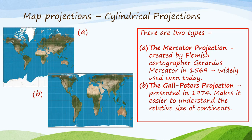Another kind of projection is the cylindrical projection. There are two types. Picture A shows the Mercator projection, created by Flemish cartographer Gerardus Mercator in 1569, and it is widely used even today — this is the kind of map you would easily recognize on a wall. Picture B is called the Gall-Peters projection, presented in 1974, created to make it easier to understand the relative size of continents. If you compare Africa on the Mercator projection with Africa on the Gall-Peters projection, you can see that Africa is actually much larger, because we're so used to seeing the Mercator projection.